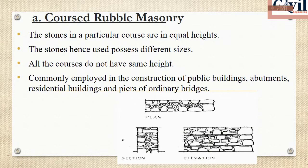In coursed rubble masonry, there is an equal height in a particular course, though sizes may differ. All courses do not have the same height — each layer has courses of the same height. This type is commonly used in public buildings, apartments, residential buildings, piers, and ordinary bridges.